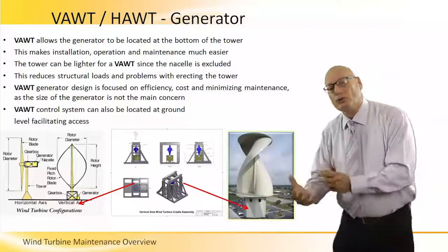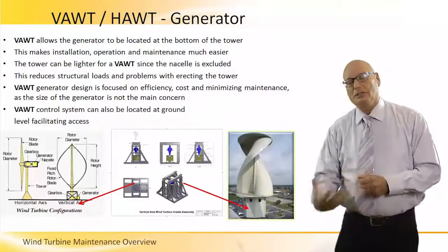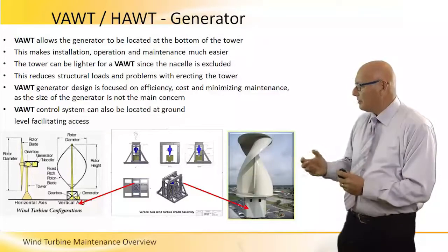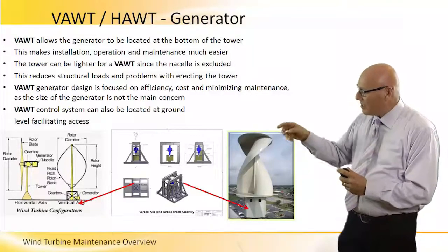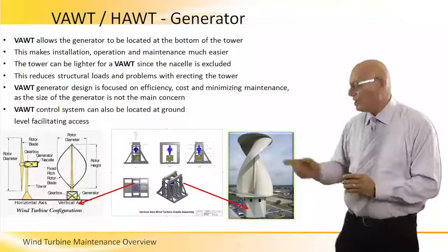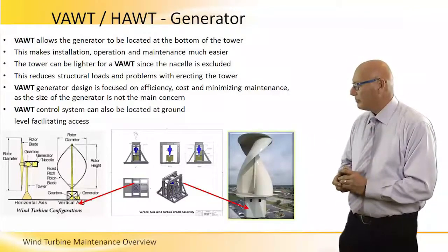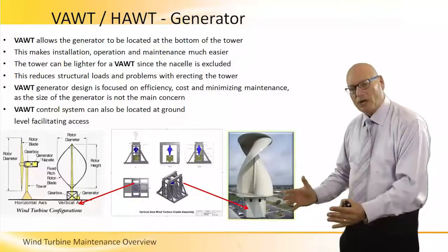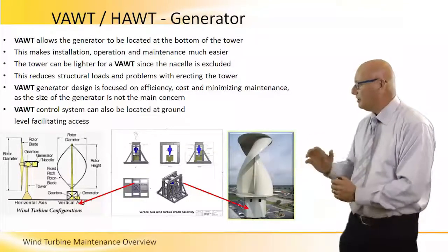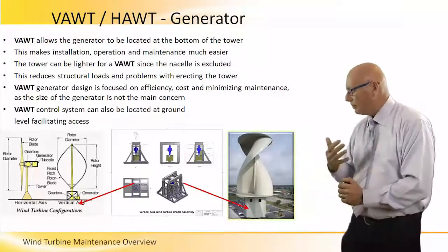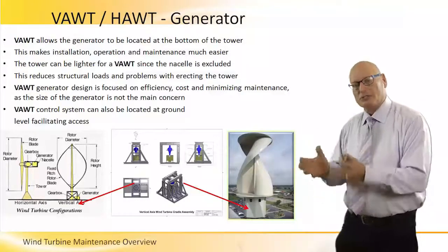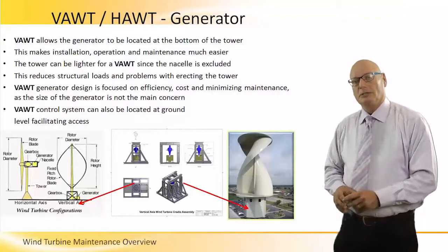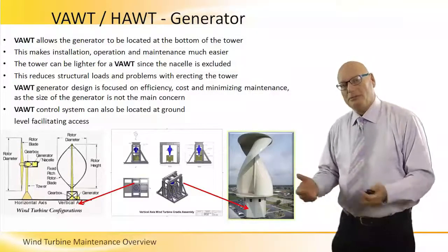The control system of the VAWT is also down at ground level. The picture in the center demonstrates what is happening at the base of the Darrieus turbine — there is a generator in a cage down on the ground. The picture on the right shows a Savonius turbine, which is covered like a room; the generator and control room are both located there, making it easy to maintain.